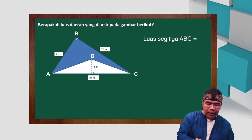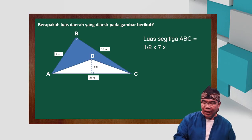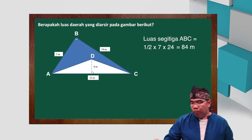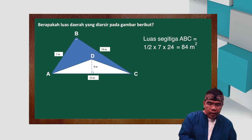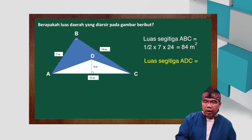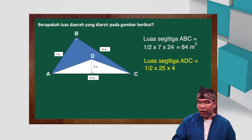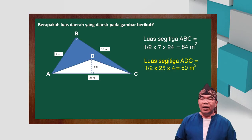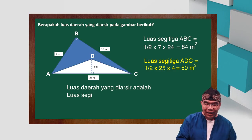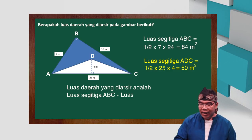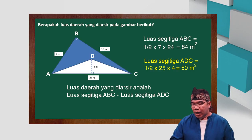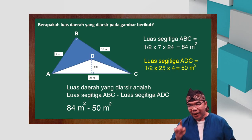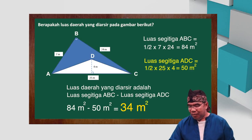Luas segitiga A, B, C sama dengan setengah dikali tujuh dikali dua puluh empat, sama dengan delapan puluh empat meter persegi. Segitiga berikutnya adalah segitiga A, D, C. Luasnya adalah setengah dikali dua puluh lima dikali empat, sama dengan lima puluh meter persegi. Luas daerah yang diarsir adalah luas segitiga A, B, C dikurangi luas segitiga A, D, C, atau sama dengan delapan puluh empat dikurangi lima puluh meter persegi, hasilnya tiga puluh empat meter persegi.